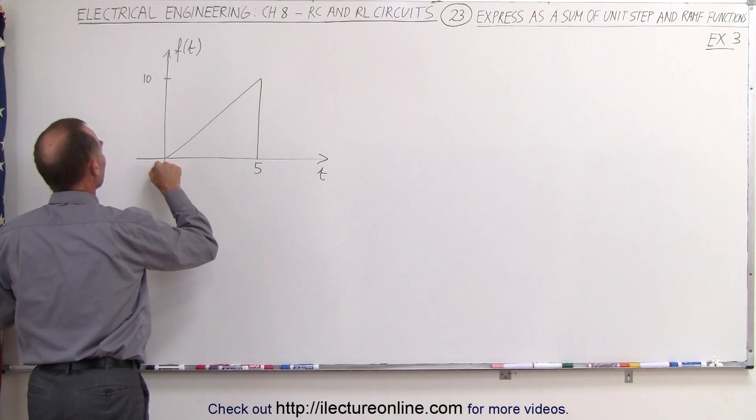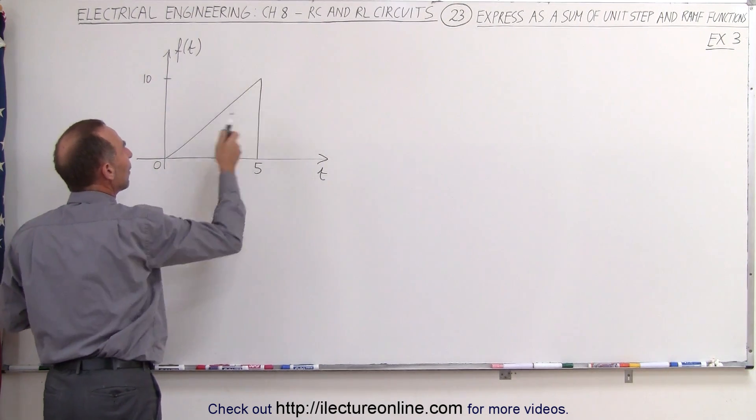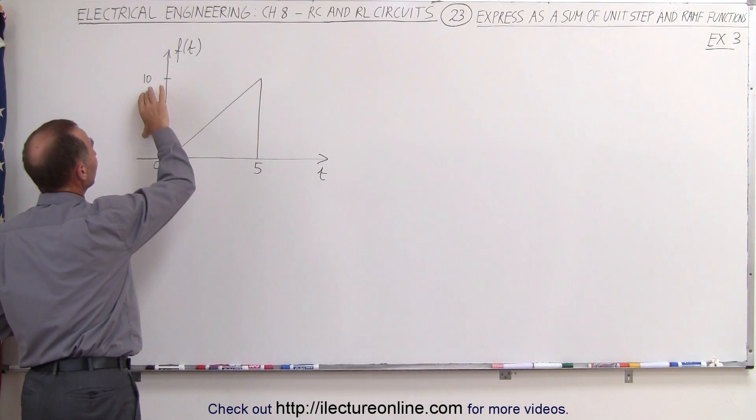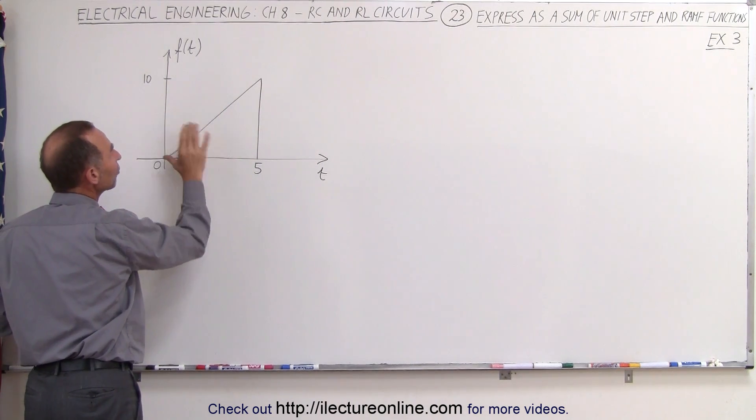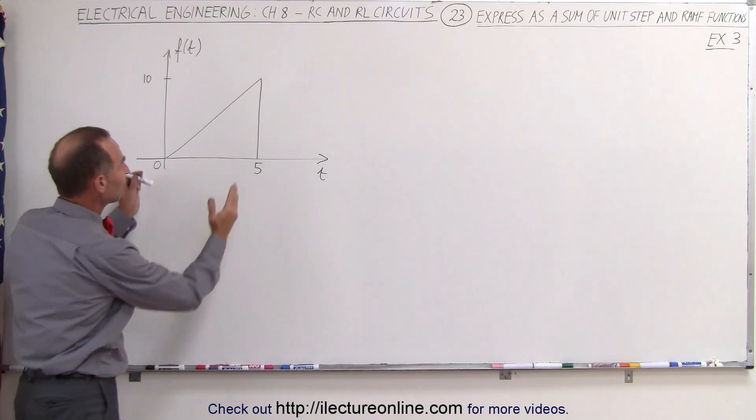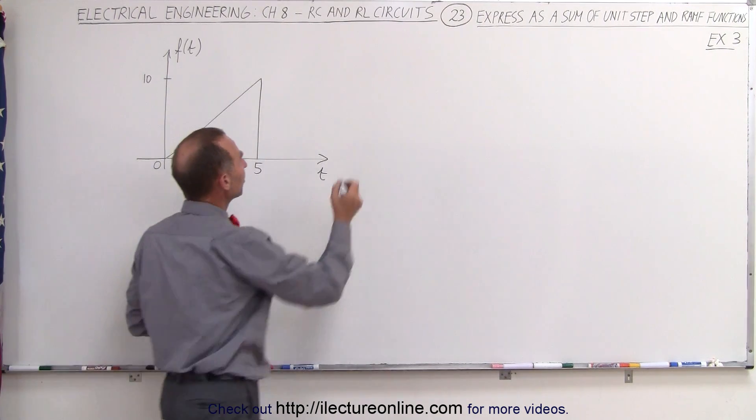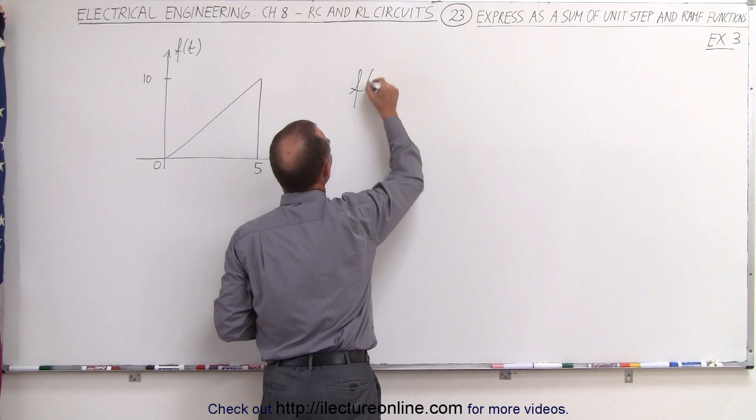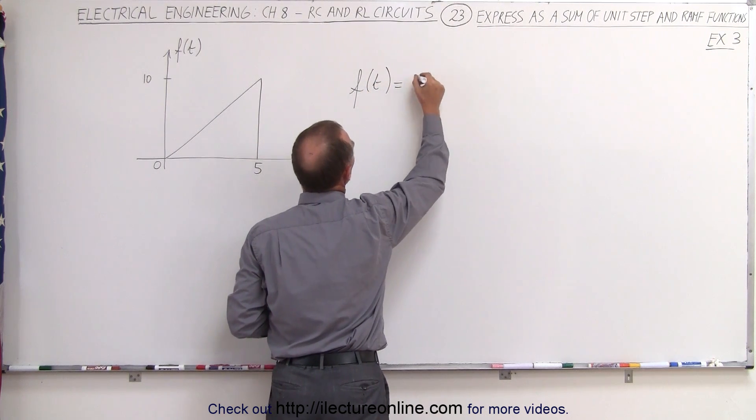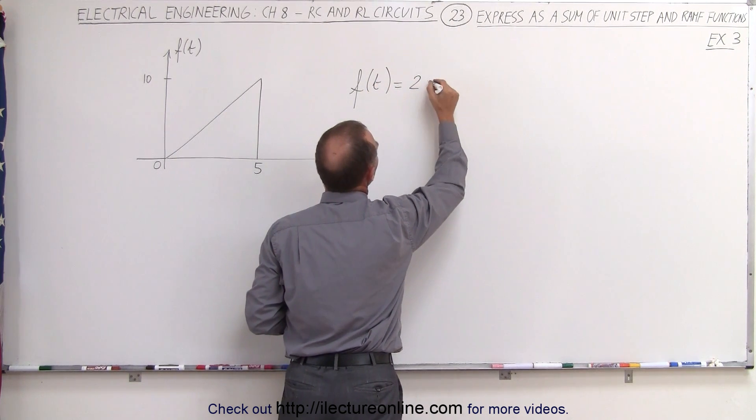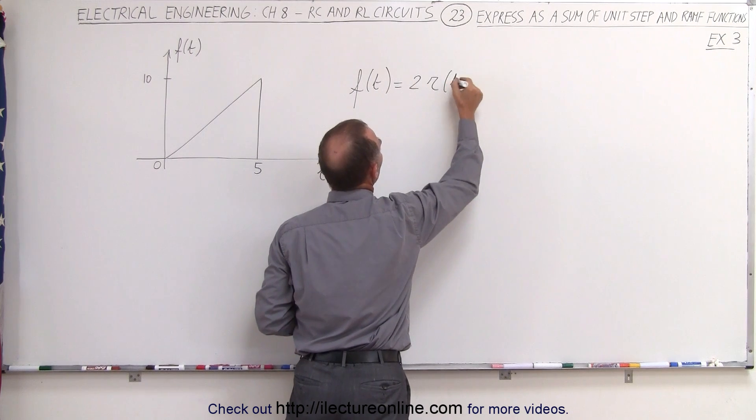Starting from 0 to 5, this is obviously a ramp function and notice that the slope is a rise of 10 over a run of 5, the slope is equal to 2. So for this first five seconds we can represent the function as follows: f(t) is equal to 2 times the ramp function with no offset in time.